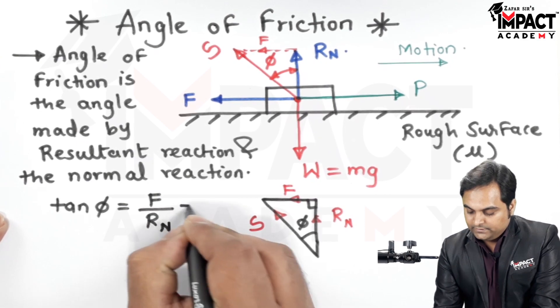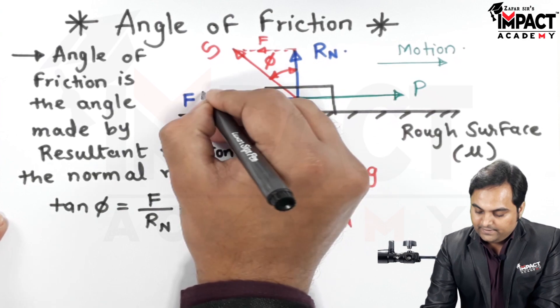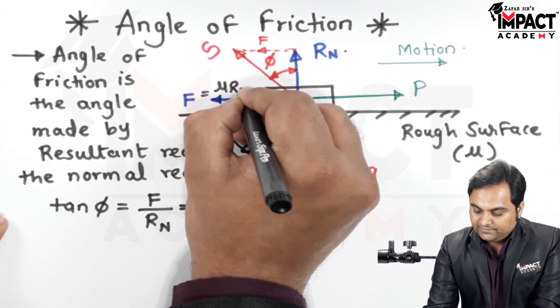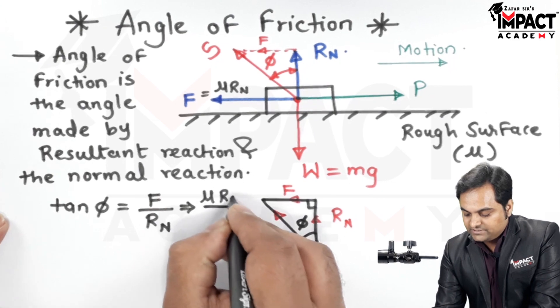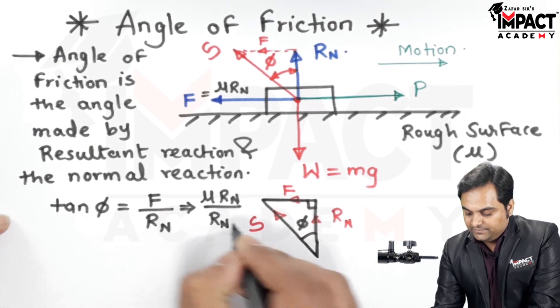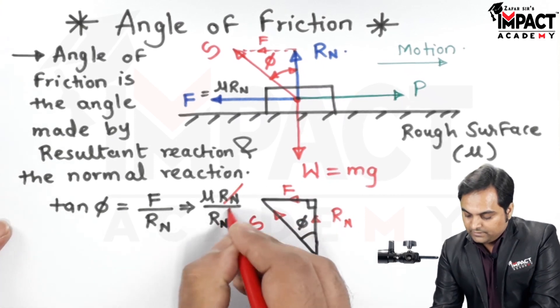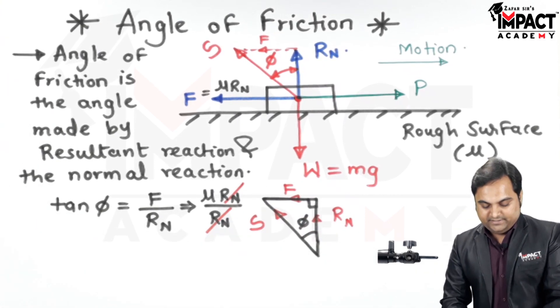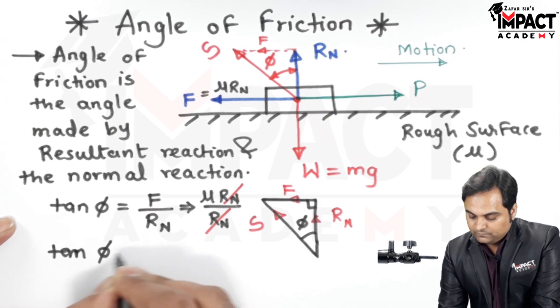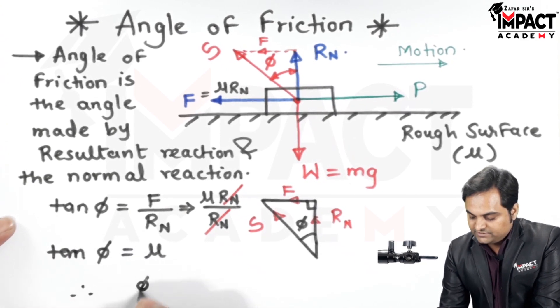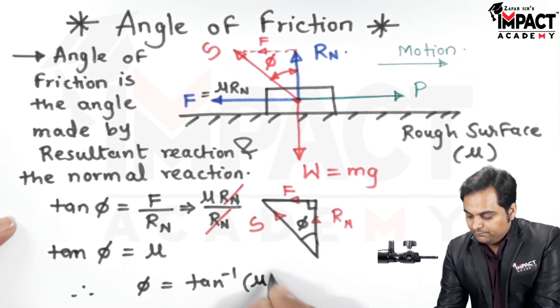F upon Rn. Next we know that the friction force is given by mu into Rn, that is it depends upon coefficient of friction and normal reaction divided by Rn. So from numerator and denominator Rn gets cancelled and it means tan phi is equal to mu or in other words we can say phi is tan inverse of mu.